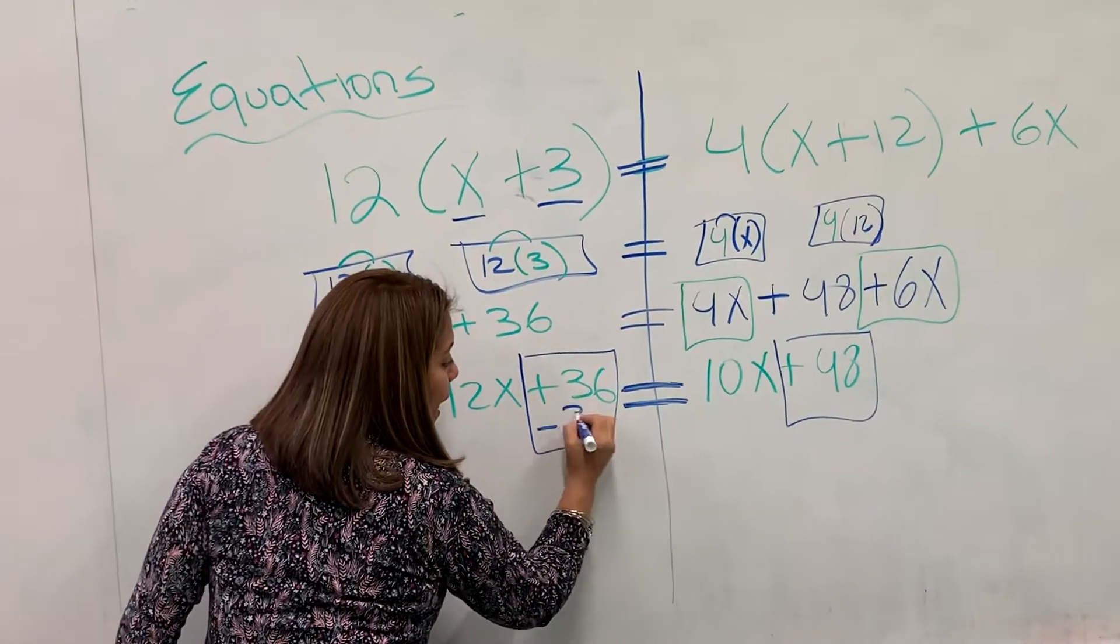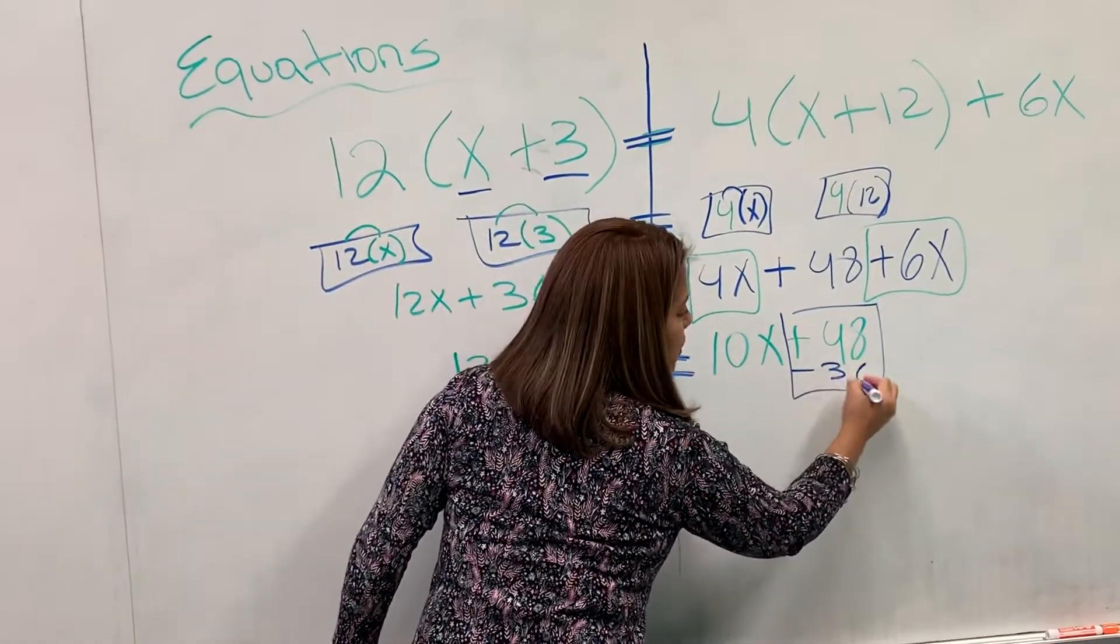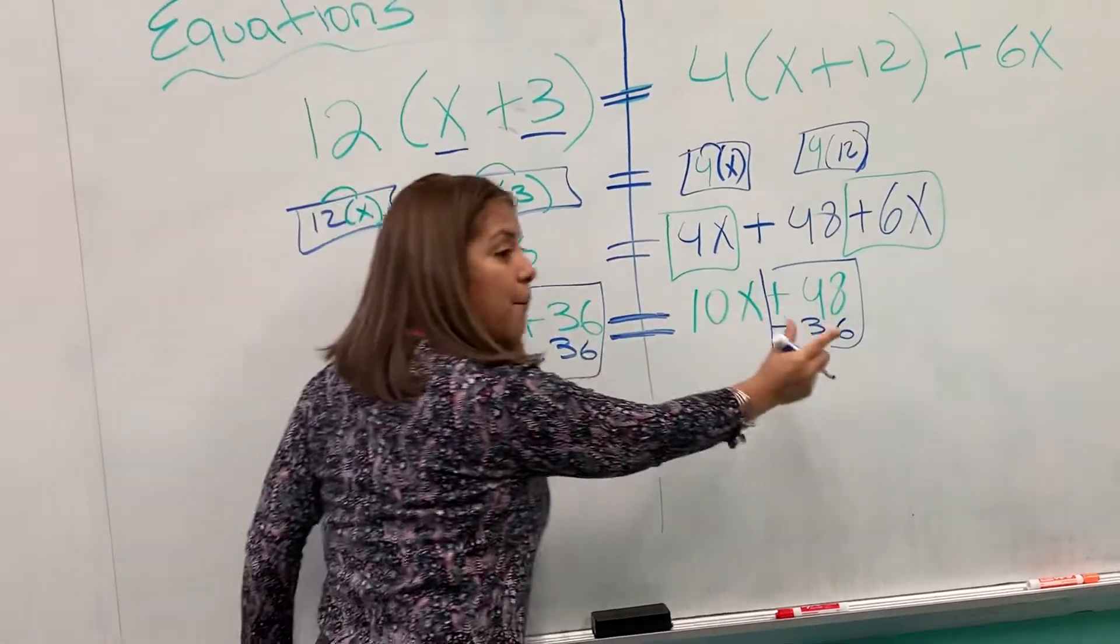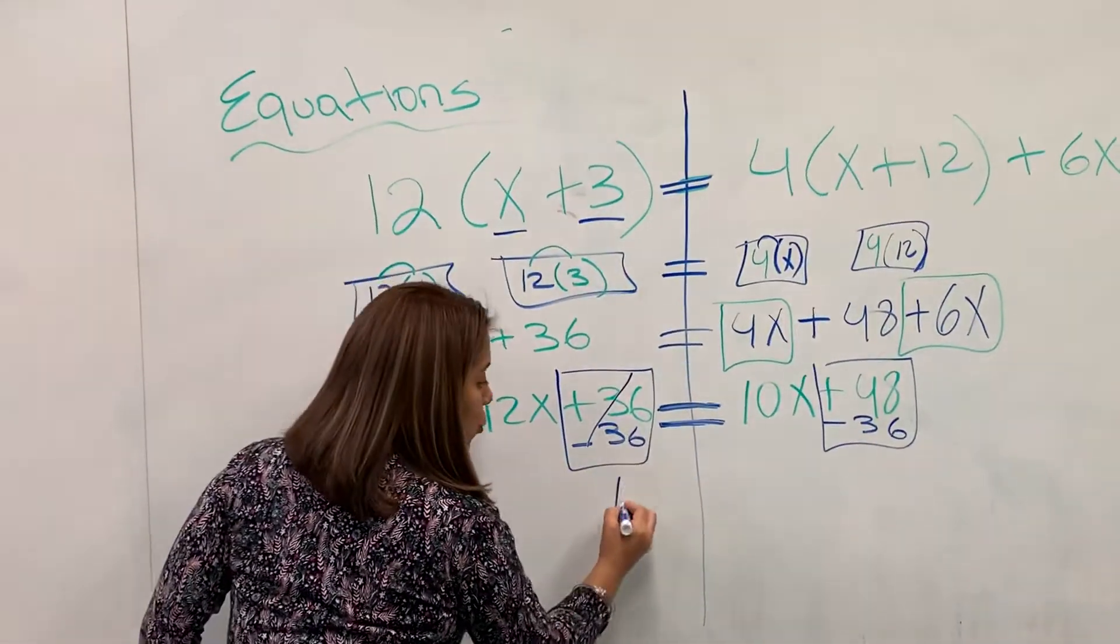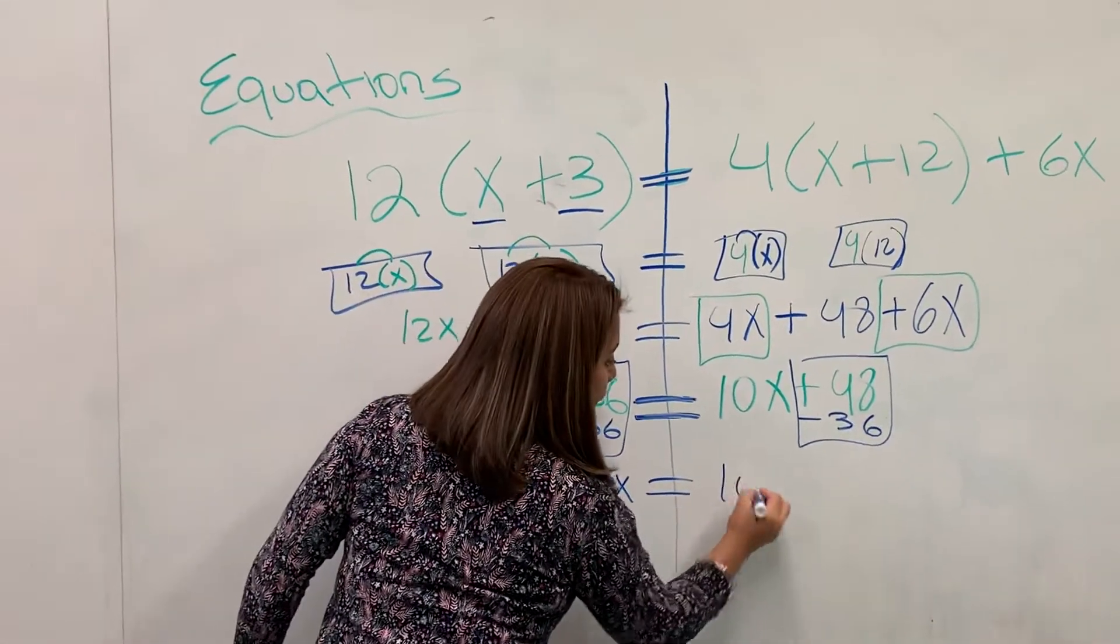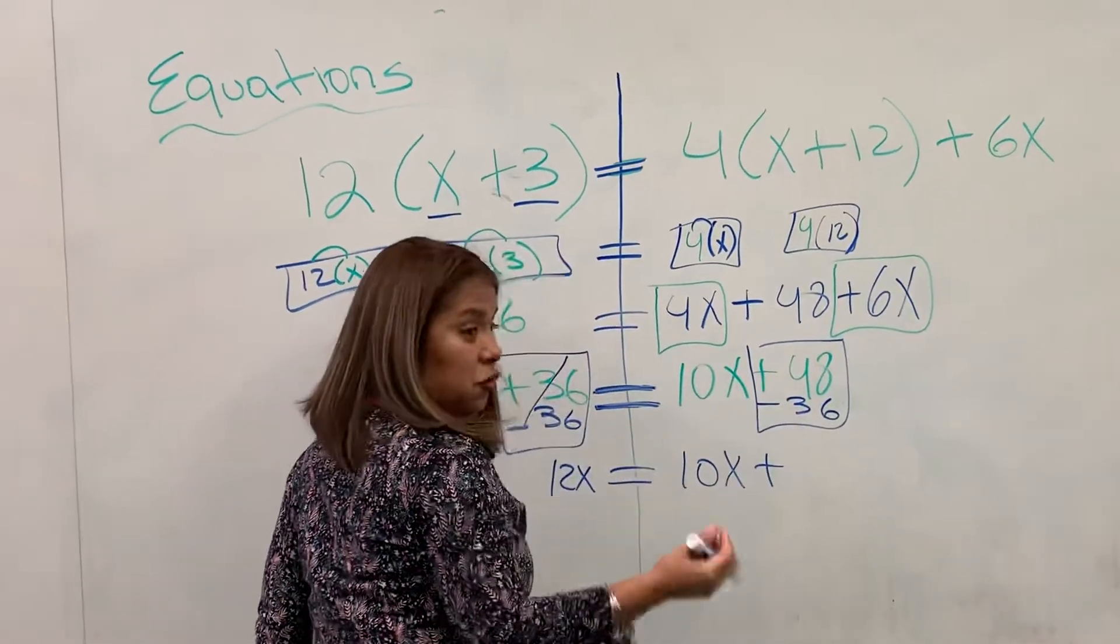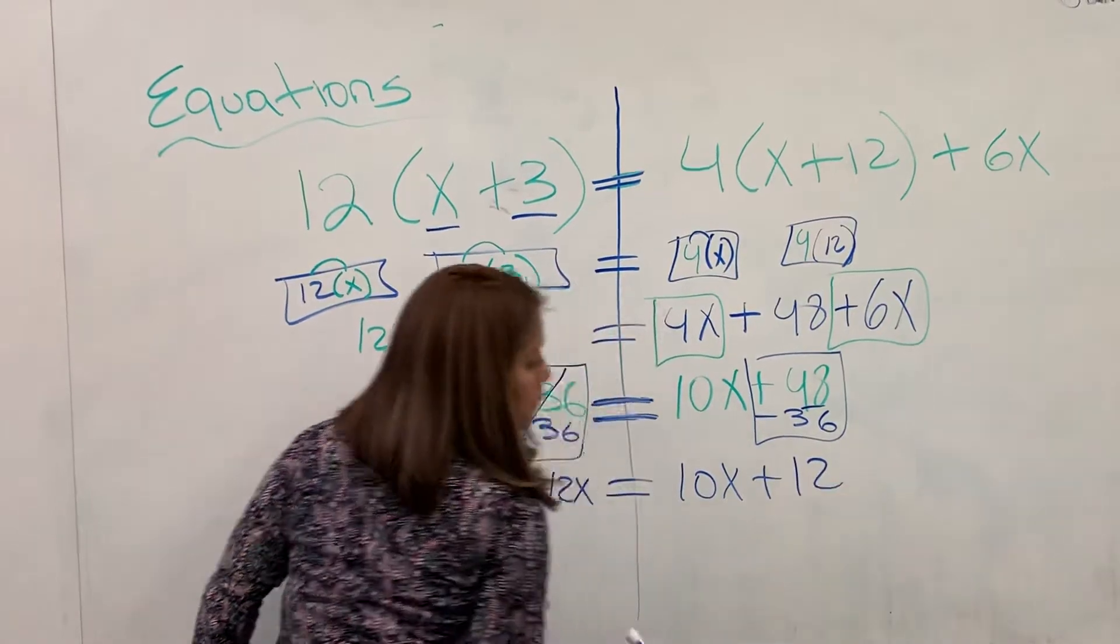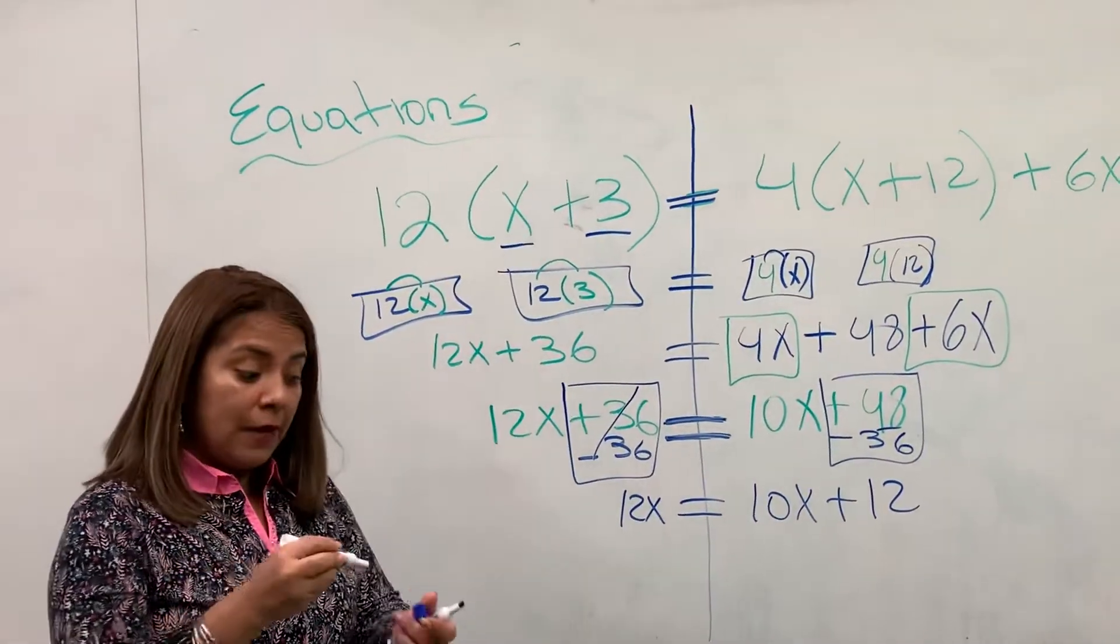Positive 36, negative 36. And negative 36. Inverse operation of positive. Whatever I do to one side of the equation, I must do to the other side of the equation. This goes away. I have a 12x, bring down my equals, 10x, positive, because positive and negative, I know I have to subtract, but I have more of my 48 that will give me a 12. Okay? I still have like terms.